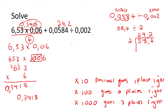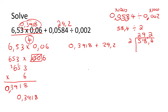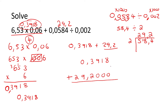So now we can say zero comma three nine one eight plus 29 comma two. When adding, the decimals must go on top of each other — so that's zero zero comma three nine one eight and then 29 comma two, with zeros filling the empty spaces. Eight plus zero is eight, one plus zero is one, nine plus zero is nine, three plus two is five, zero plus nine is nine, and then 29. So the answer is 29.5918.